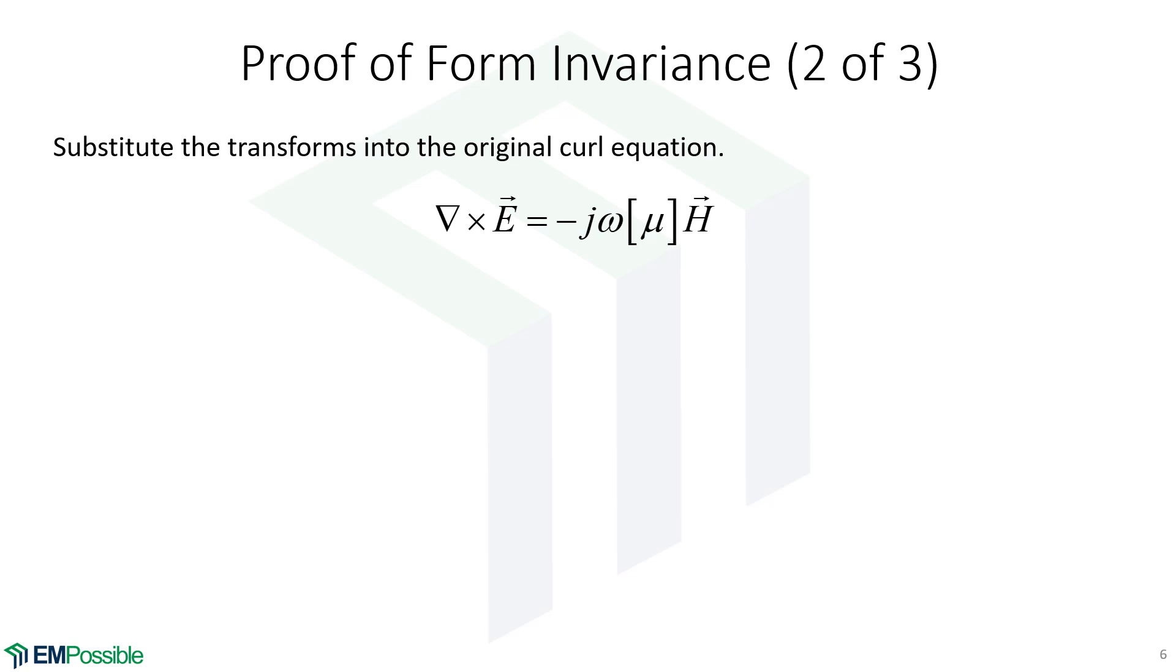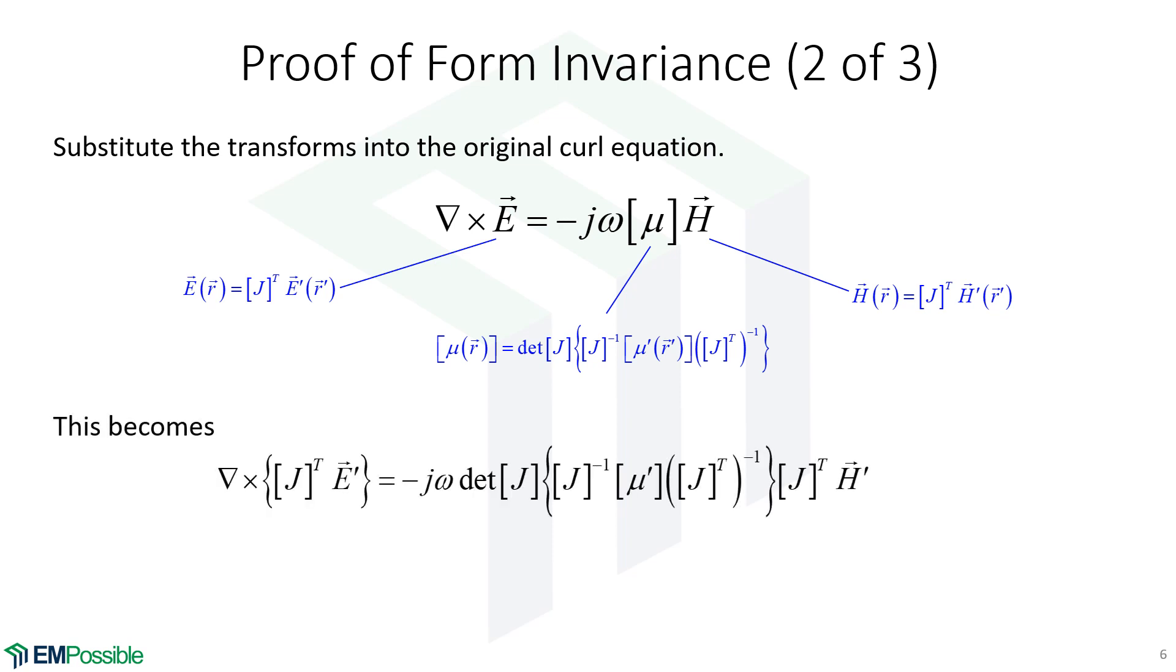So here we are with Faraday's law in our original coordinate system. So what we can do, we can substitute in the expression of the original field with our transformed field. And it's going to have to carry along this Jacobian matrix with it. But we substitute that in. We have a similar expression for our permeability tensor. And last, we have a similar expression for the magnetic field. So we have three substitutions. When we just blindly do that, this is where we end up.